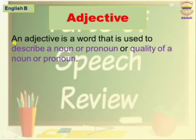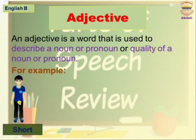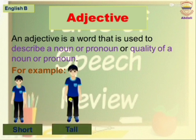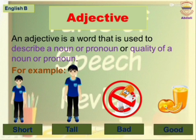Adjective. An adjective is a word that is used to describe a noun or pronoun, or the quality of a noun or pronoun. For example: short boy, tall boy, bad thing, good thing.